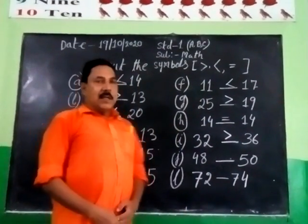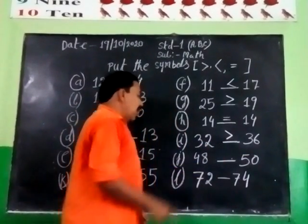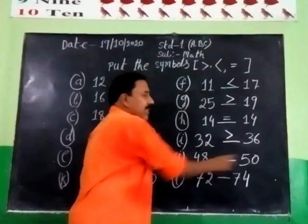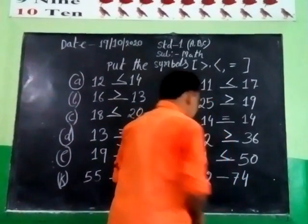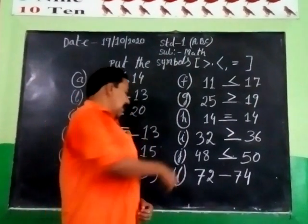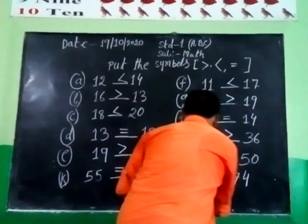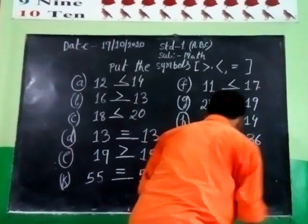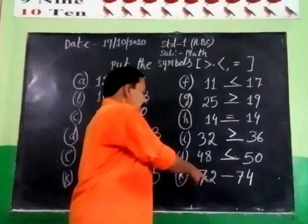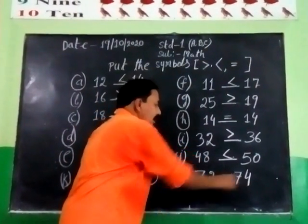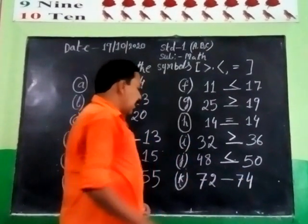Number 8: 48 and 50. 48 is less, 50 is greater. The sign is less. Number 8: 72 and 74. 72 is less, 74 is greater. The sign for that.